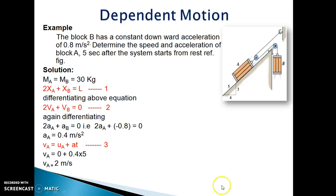Let's try to solve a numerical on dependent motion. The block B has a constant downward acceleration of 0.8 m/s². Determine the speed and acceleration of block A, 5 seconds after the system starts from rest. Refer figure. In this figure we can see block A and B are connected by inextensible cable which are moving over a pulley.